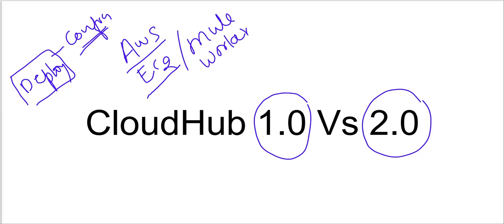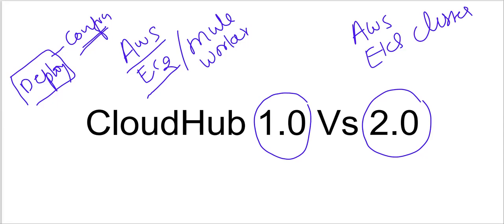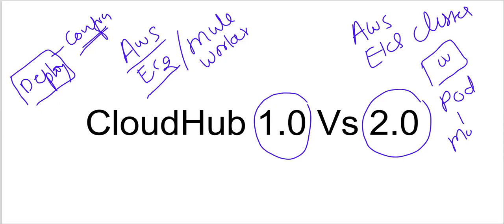In the case of CloudHub 2.0, we get an AWS EKS cluster, and one of the workers will be chosen for the deployment. Inside that worker, one pod will be created, and inside that pod our Mule app will be deployed.